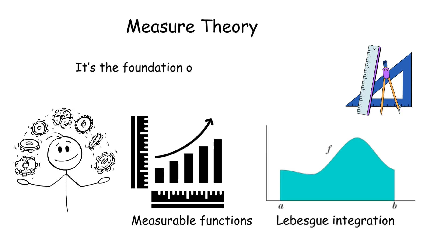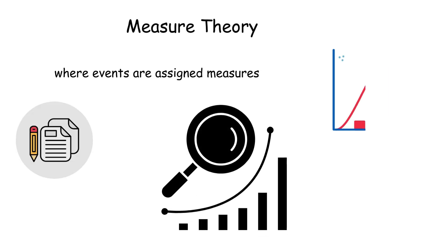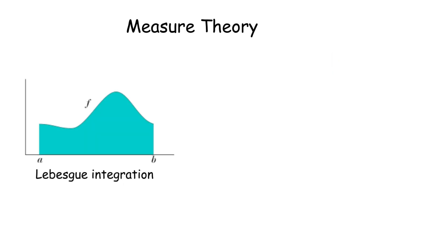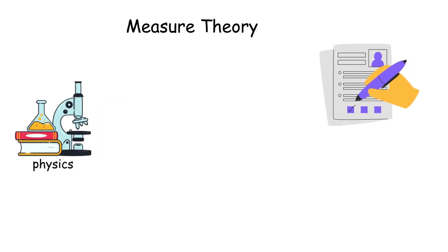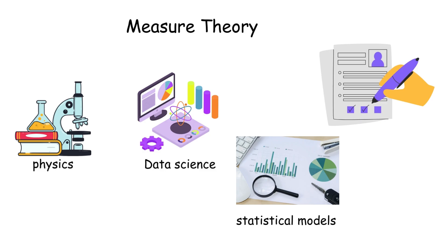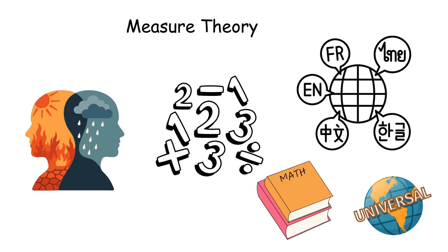It's the foundation of modern probability, where events are assigned measures, and it underpins functional analysis. For example, Lebesgue integration allows us to integrate functions with discontinuities that Riemann can't handle. Its applications range from physics to data science, where it supports statistical models. Measure theory feels abstract, but gives us a universal language for 'how much' in math.